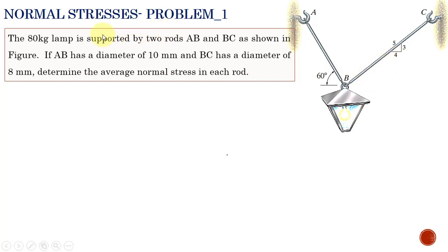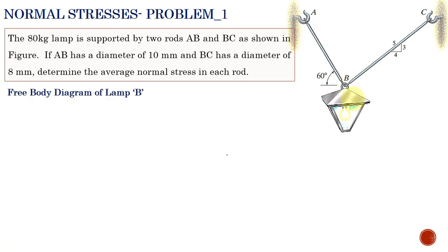Before finding the stresses acting on these rods, we must know the forces acting on the rod — only then can we calculate the normal stresses. So we need to construct the free body diagram of the given configuration. We have two rods AB and BC, and at point B a lamp is supported with a mass of 80 kg. We are going to construct the free body diagram of point B, where the lamp is supported and where rods AB and BC are connected together.